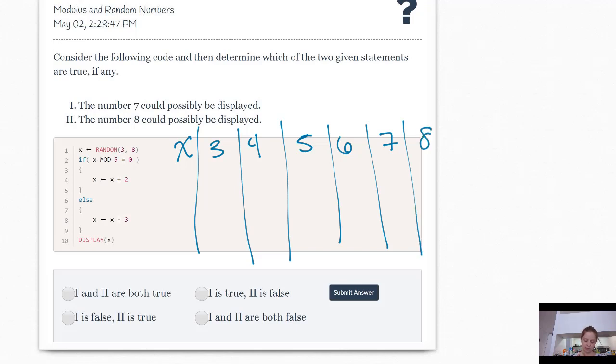And then we have an if statement. We have if X mod 5 is 0, then do what's in red, else do what's in purple.